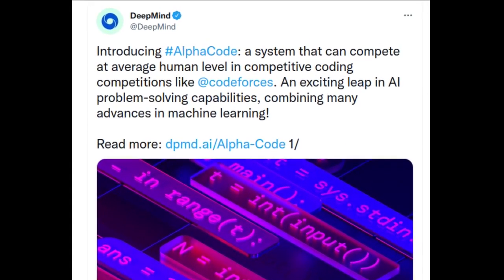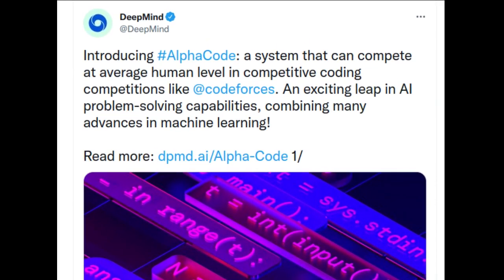DeepMind has created a system called AlphaCode that writes computer programs at a competitive level. DeepMind is the subsidiary of Google's parent company Alphabet.